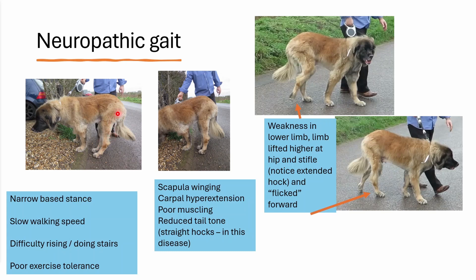We can see that the limbs have a lot of muscular atrophy, and we actually have this scapular winging — you can see the scapulae are pointing out higher than the rest of the back when the dog is standing. This dog is so weak he has to put all of his limbs underneath his body at once.